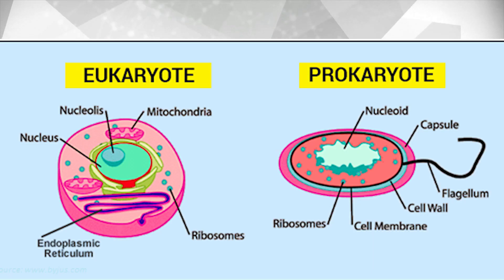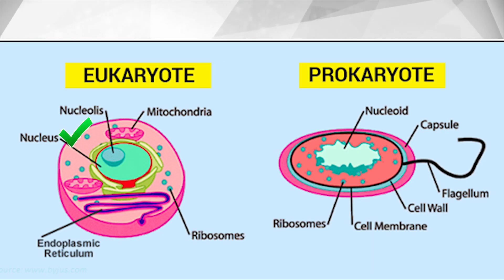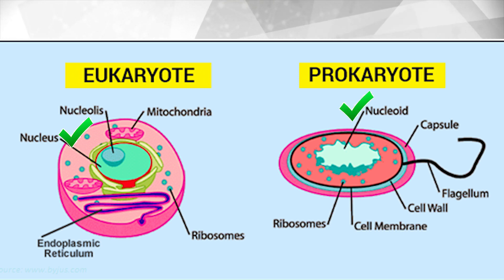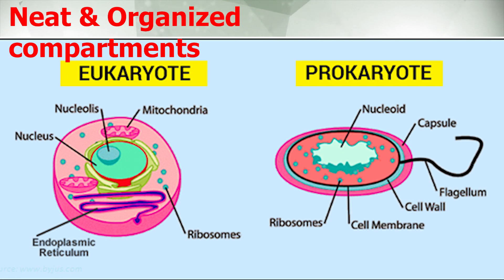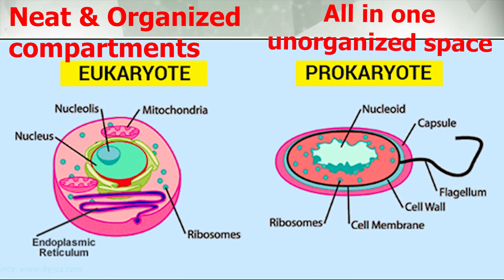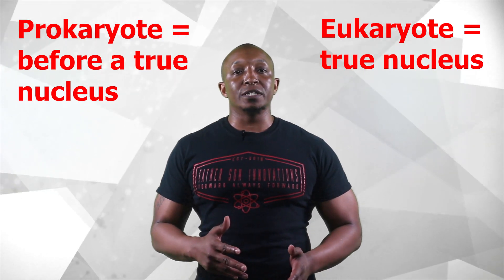Now let's take a look at the differences between prokaryotic and eukaryotic cells. First, eukaryotes have their genetic material stored in a nucleus. Prokaryotes do not have a true nucleus — they have a nucleoid region, an open part of the cell that holds free-floating DNA. Genetic material is much more organized in a eukaryotic cell as a result. Prokaryote actually means 'before a true nucleus,' while eukaryote means 'true nucleus.'